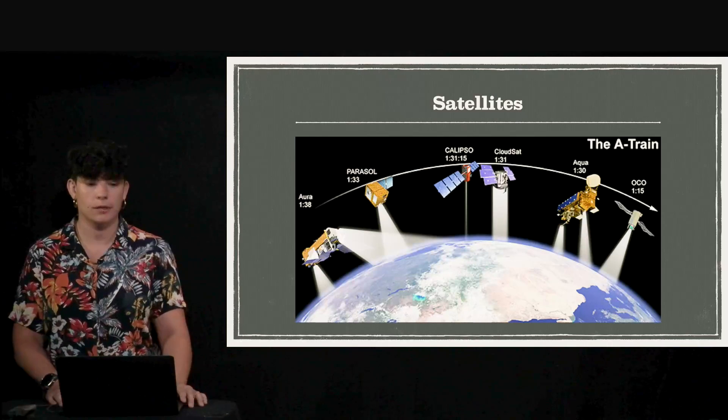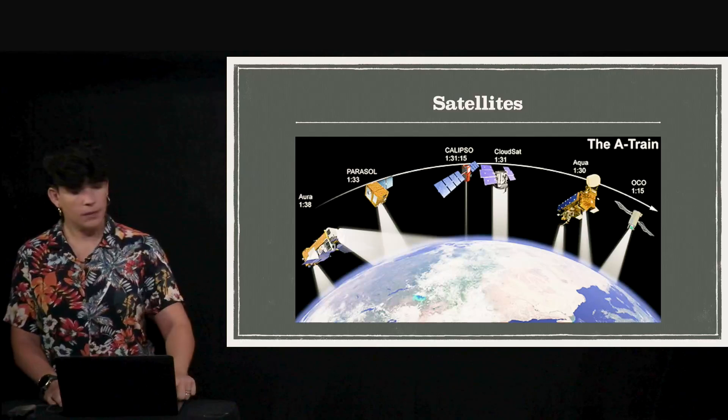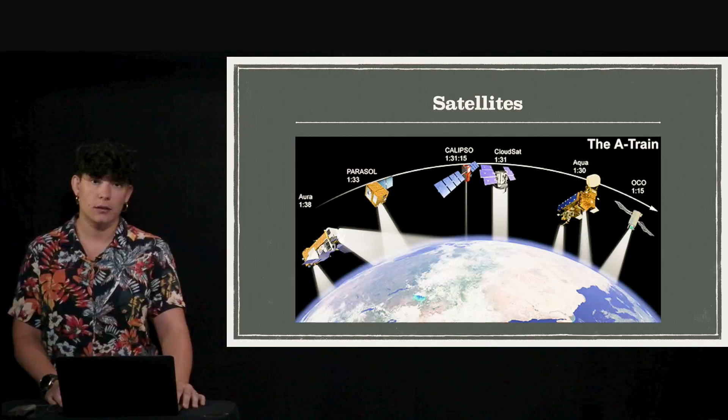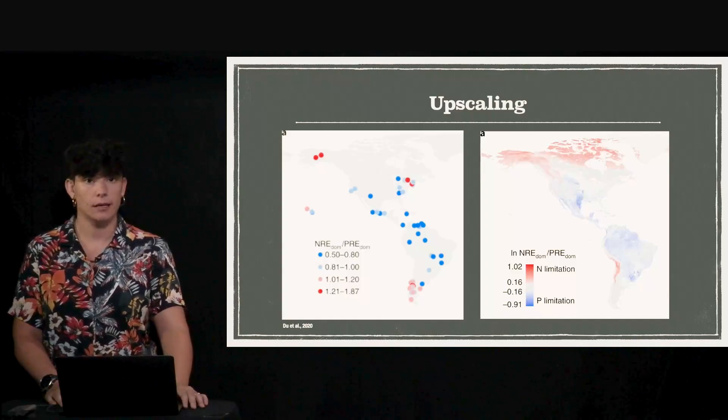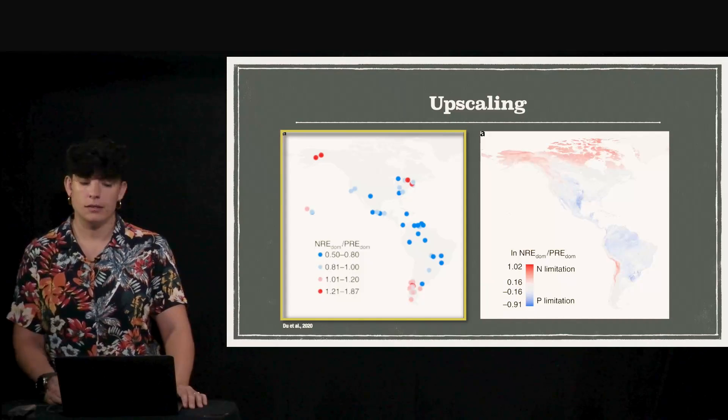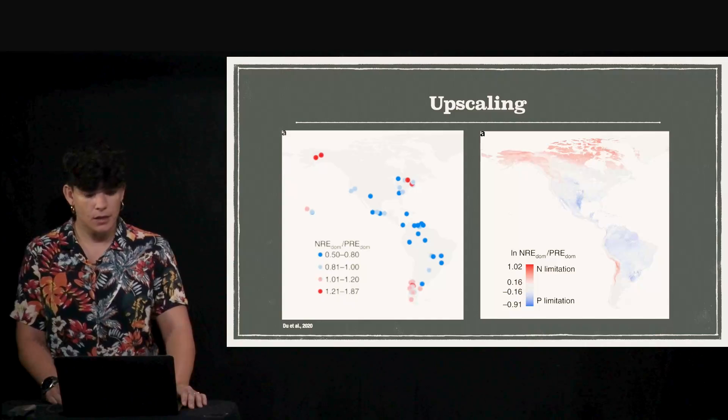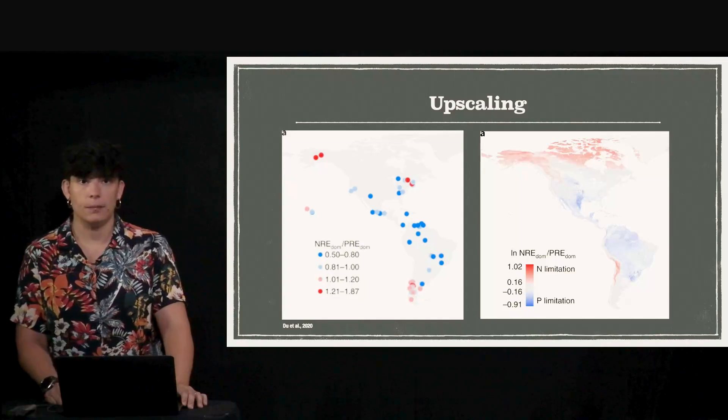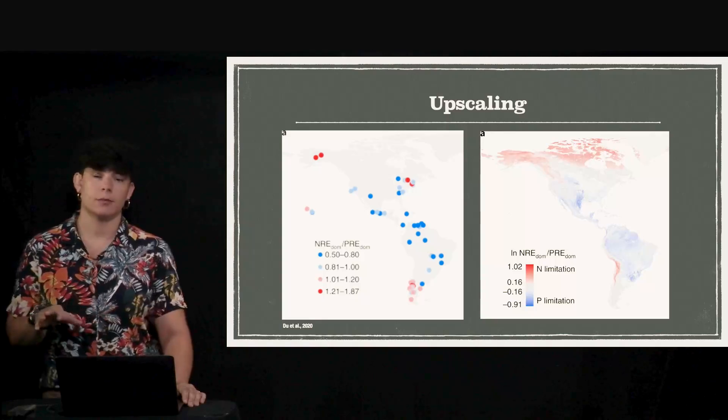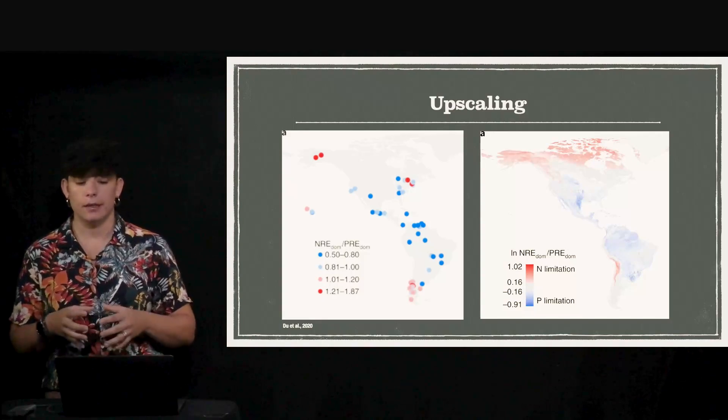But then another way to create maps, sometimes when we don't have a signal from a satellite, would be the upscaling approach. Here in the first map we have different dots. This is taken from a paper, Doytal 2020, just an example of an upscaled map where they had real data. So each point is representing a real point where some field data has been taken.